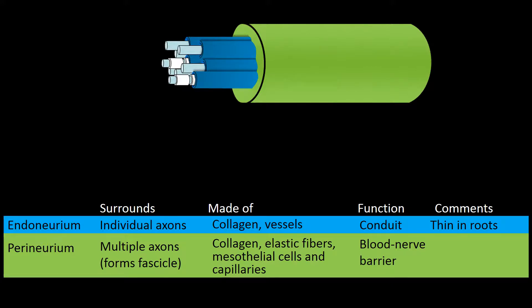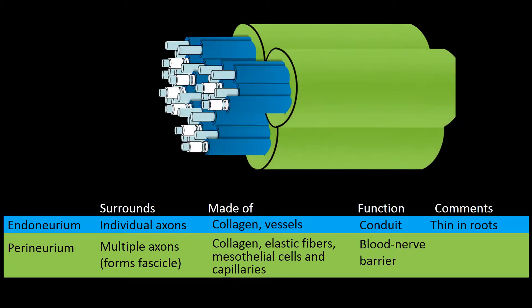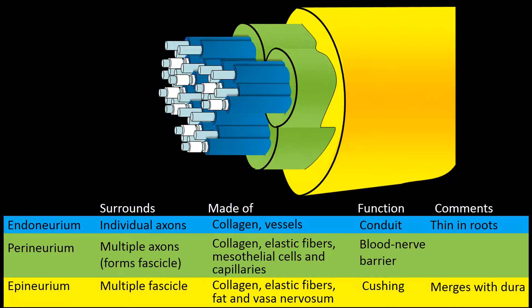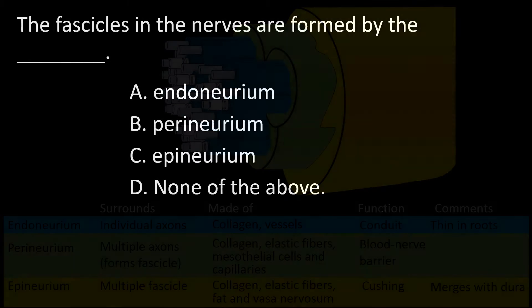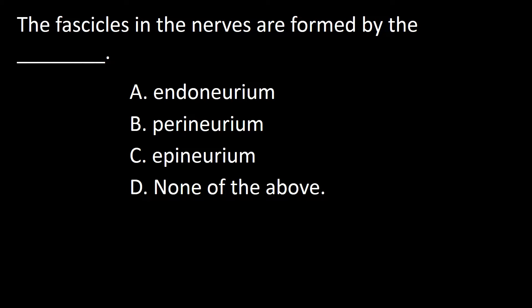The perineurium functions as the blood-nerve barrier. Multiple fascicles are wrapped around by the epineurium forming the nerves. The epineurium, in addition to harboring the vasa nervorum, behaves as a protective cushion layer for the nerve. So the answer to this question is B.